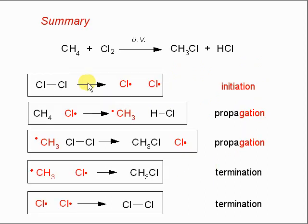Here's a summary. There's the overall reaction, the reactants, products, and conditions (UV light). Here are the different steps: the initiation step and two propagation steps. This is the chain reaction part forming the radicals, which then react with other molecules.